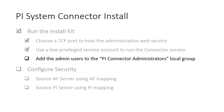The Installation Kit will create a local Windows group called PI Connector Administrators. Members of this group will have permission to connect to the PI System Connector Administration page, to create and change configuration, and to start and stop the connector. We will add John to this group.